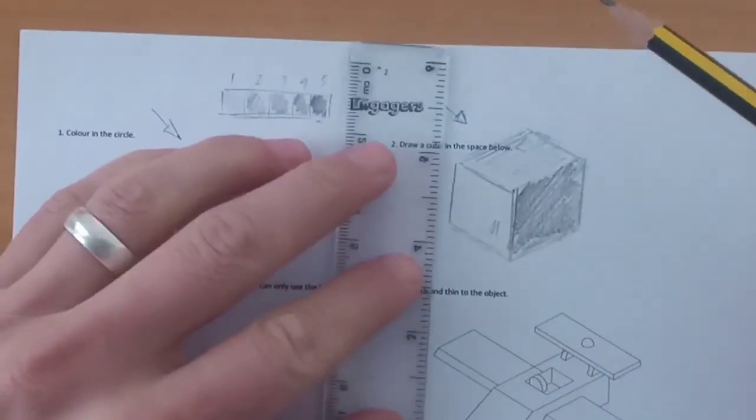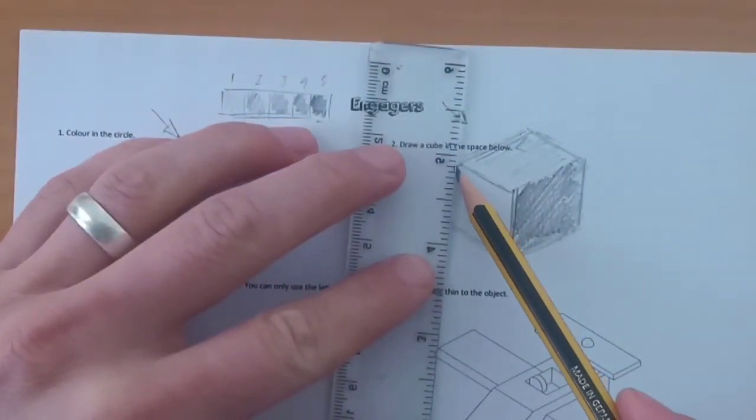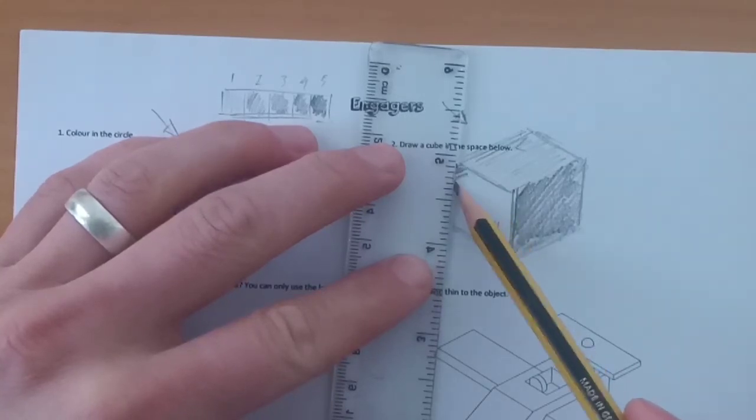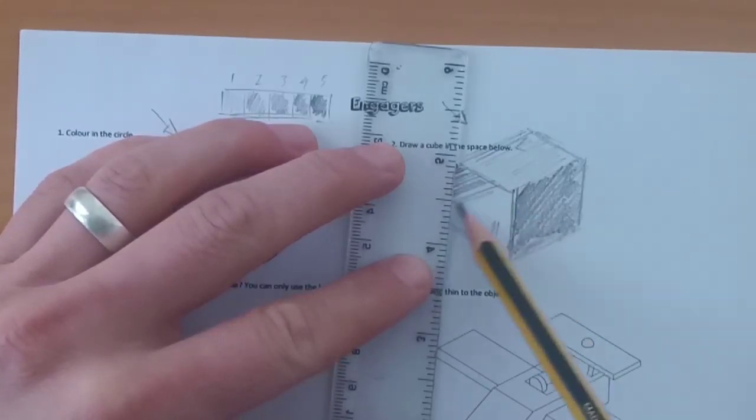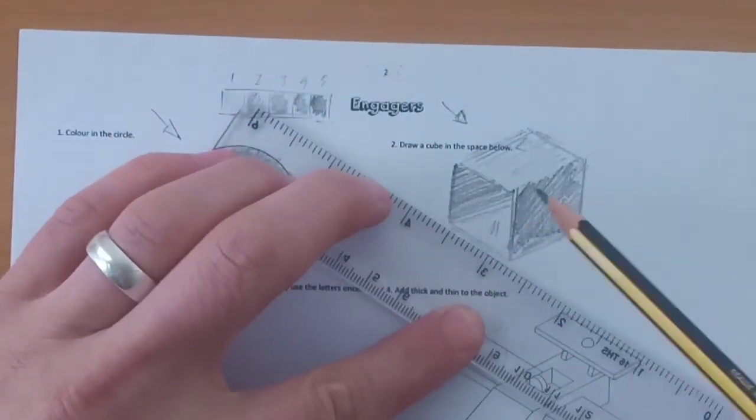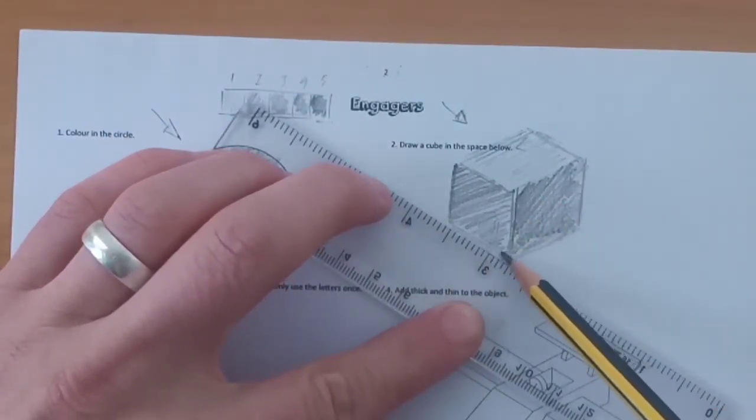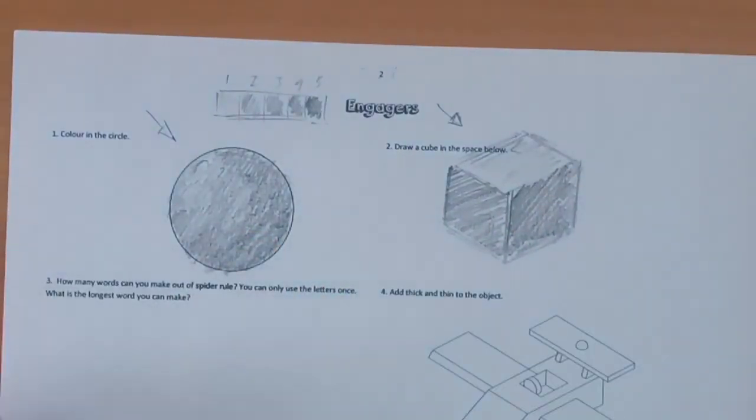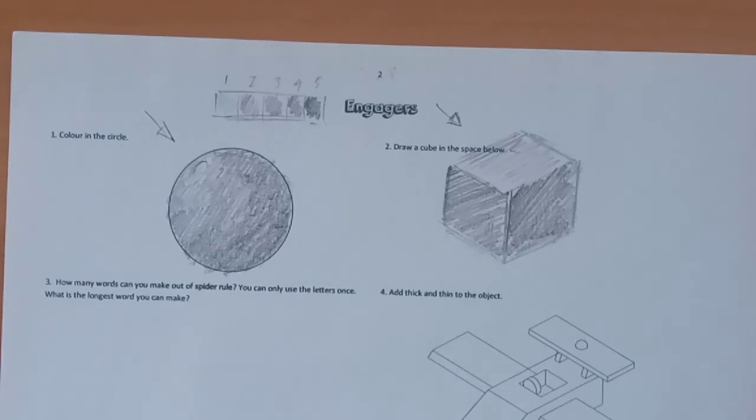A little trick you can use is to use a ruler up to the side of it. This just prevents you going over the lines. Try and keep all your pencil lines running in the same direction. When you've completed the shapes, you are then ready to move on to the first drawing task.